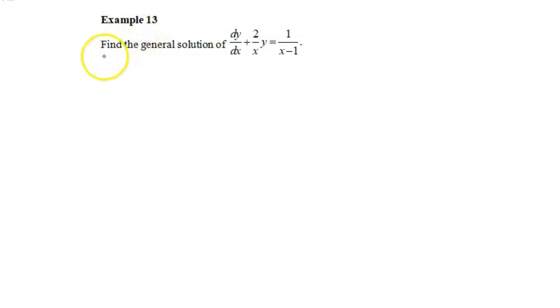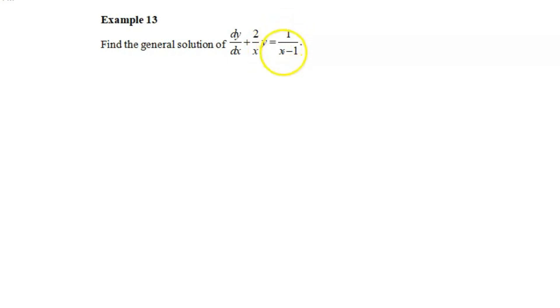Example 30. Find the general solution of dy over dx plus 2 over x times y equals 1 over x minus 1.